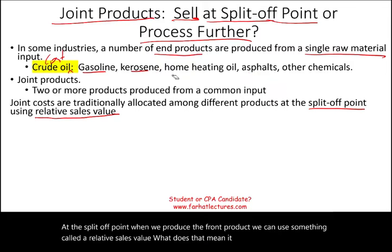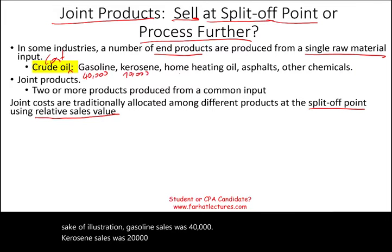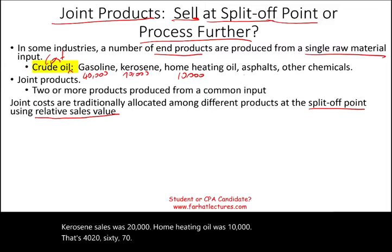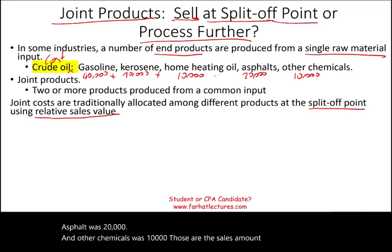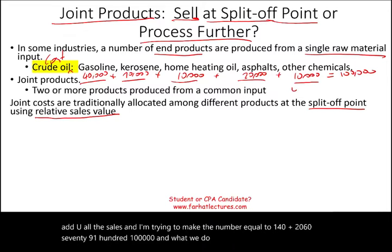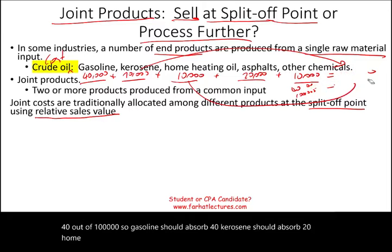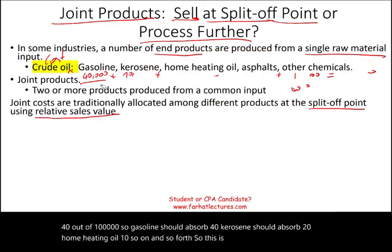For illustration: gasoline sales were $40,000, kerosene $20,000, home heating oil $10,000, asphalt $20,000, and other chemicals $10,000. Adding these up gives a total of $100,000. We then say gasoline should absorb 40% of joint costs, kerosene 20%, home heating oil 10%, and so on. This is what we mean by relative sales value — if total joint cost was $30,000, we allocate it proportionally across products.